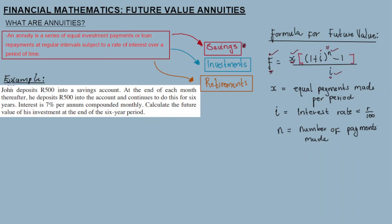Example: John deposits 500 rand into a savings account at the end of each month. He continues to do this for six years. Interest is 7% per annum compounded monthly. Calculate the future value of his investment at the end of the six-year period.